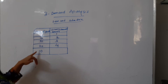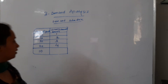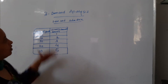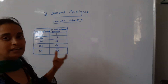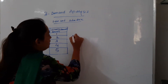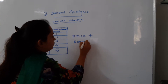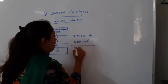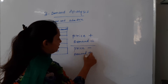And when the prices of goods is 10 — which is the lowest — demand goes to the highest. This is a schedule of demand. Isi se hum law of demand ke baare mein keh sakte hain: as prices increased, demand decreased, and when prices decreased, demand increased.